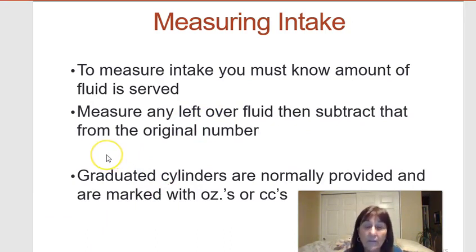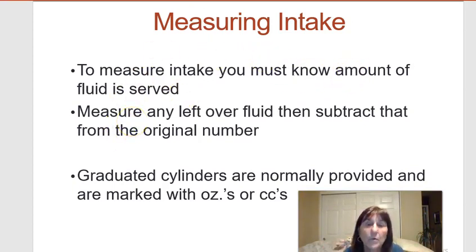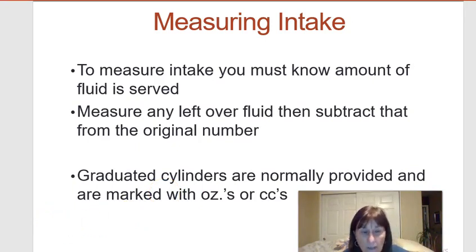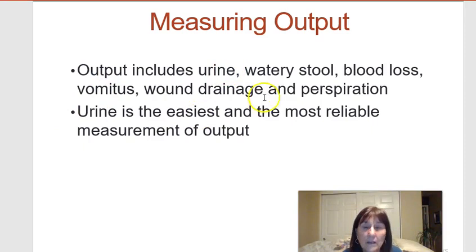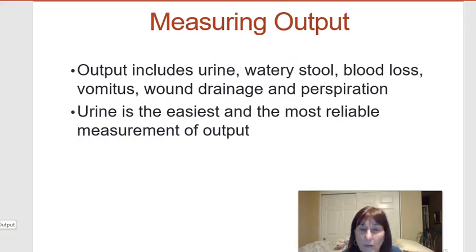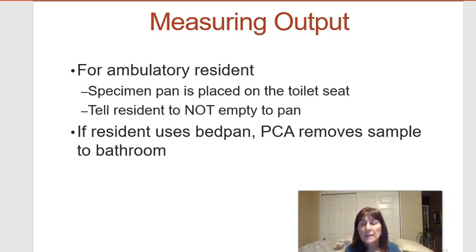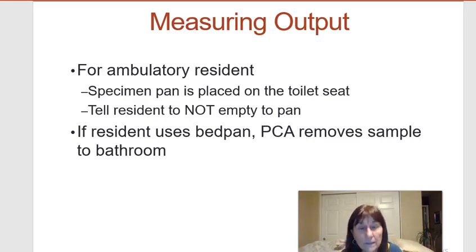To measure intake accurately, you need to know if the cup was full when served and the starting amount in a pitcher. Use measuring devices as needed. Measuring output includes urine, watery stool, blood loss, vomit, and wound drainage — urine is the primary measure, but all outputs are combined. For older adults and children with watery diarrhea, that fluid loss is added to urine output.